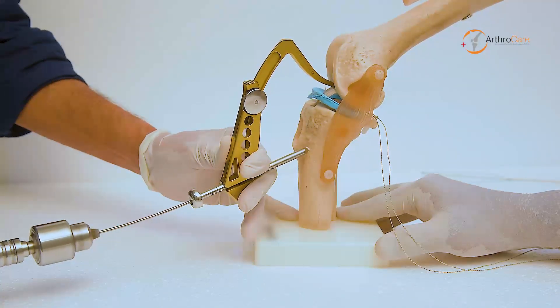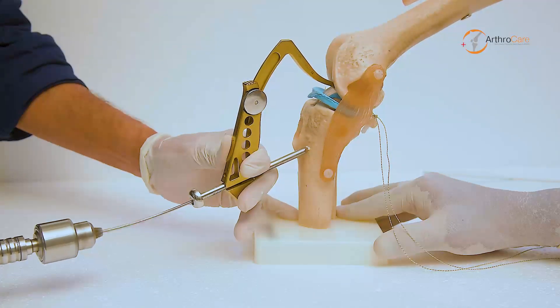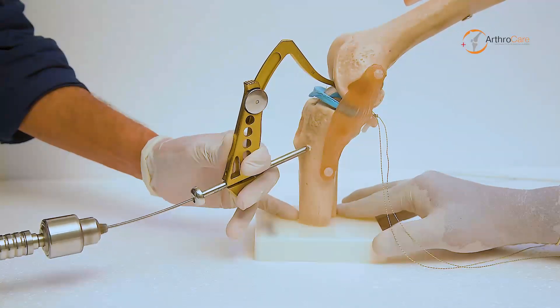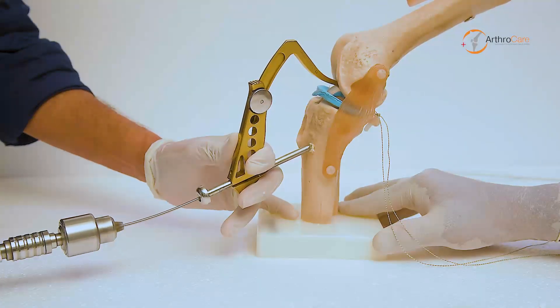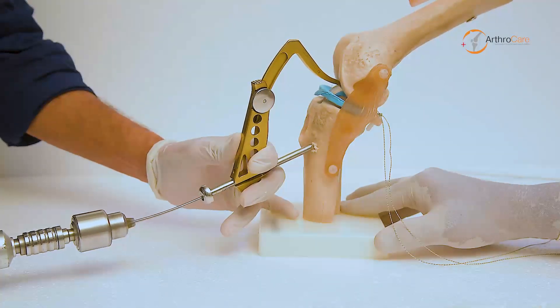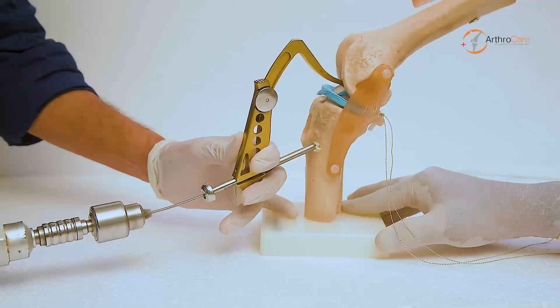With a 3.2mm guide pin, the tibial tunnel is drilled, and it should come out below the tibia posteriorly.